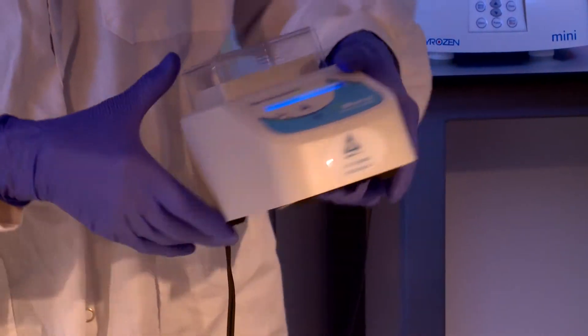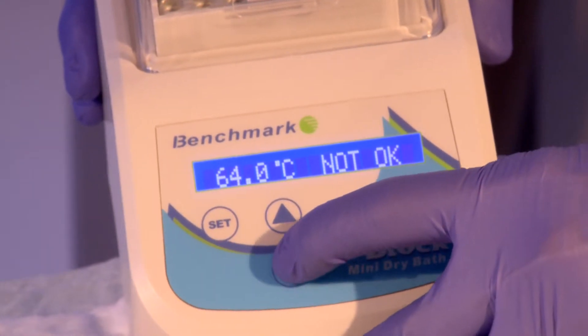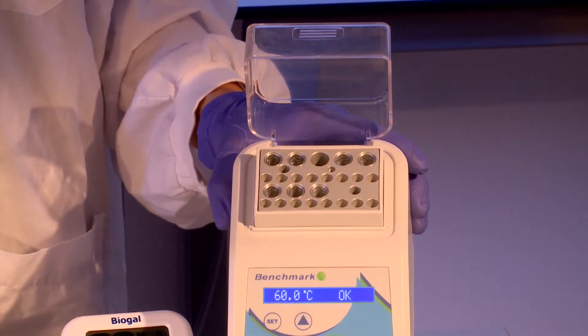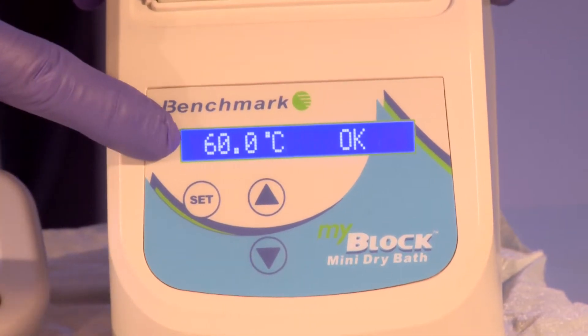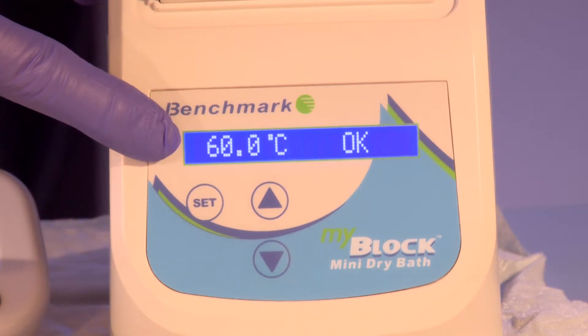Switch on the heat block and adjust it to the target temperature. In this case, we will adjust the temperature to 60 degrees. Once the block has reached the target temperature, continue with the reaction.